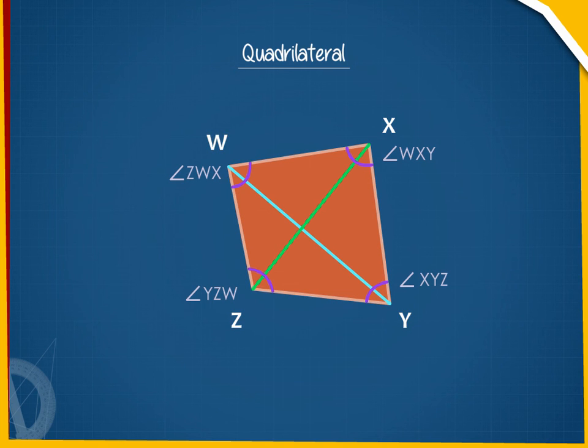Also, sides WX and YZ, and XY and ZW, are two pairs of opposite sides.